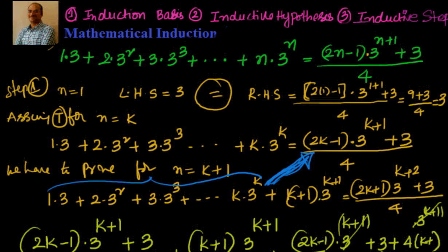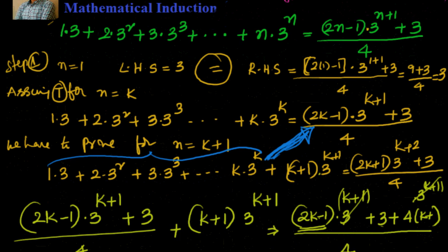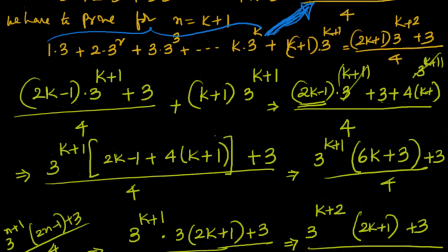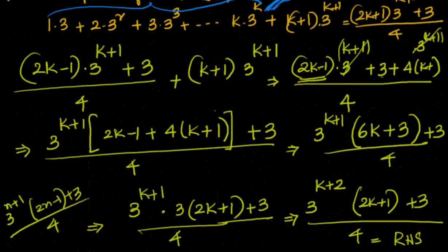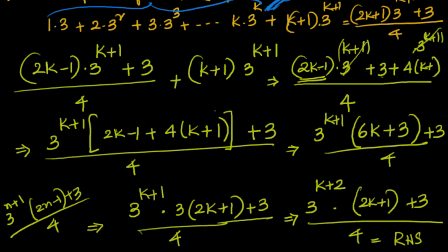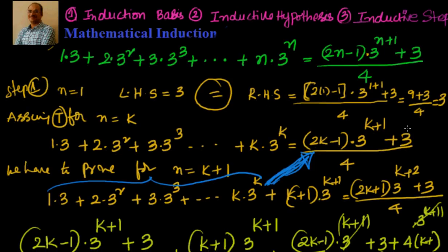Once it is true for n=k+1, it will be true for any value of n, and LHS equals RHS for any natural number n. To summarize: we proved for n=1, assumed for n=k, and proved for n=k+1 by replacing the sum of the first k terms with the assumed RHS and simplifying. See you in the next video where we'll solve more examples on mathematical induction. Thanks for visiting, bye for now.